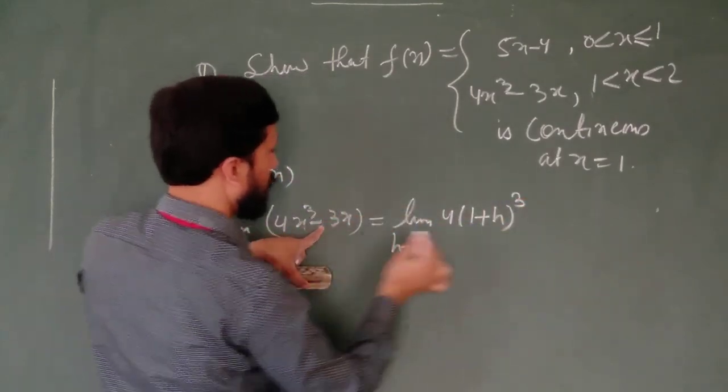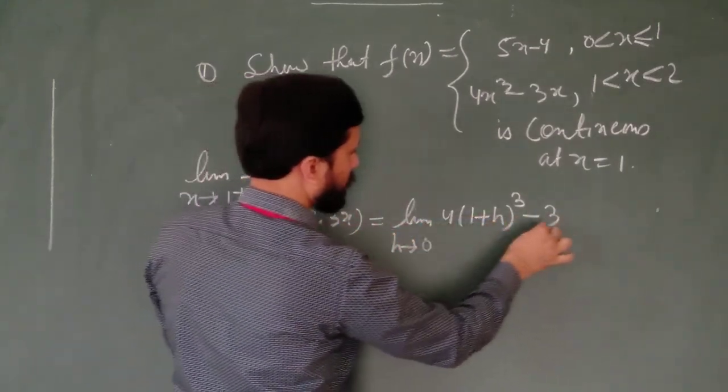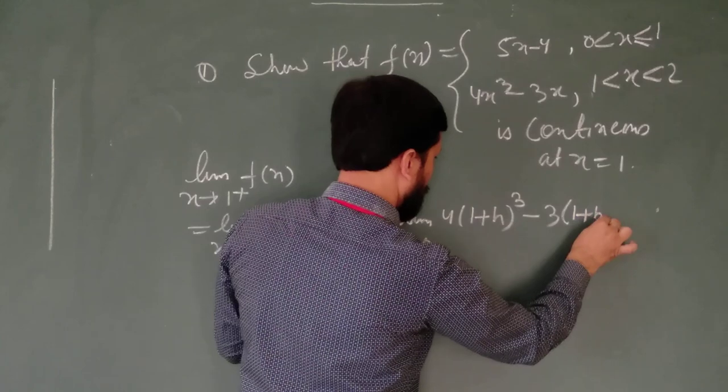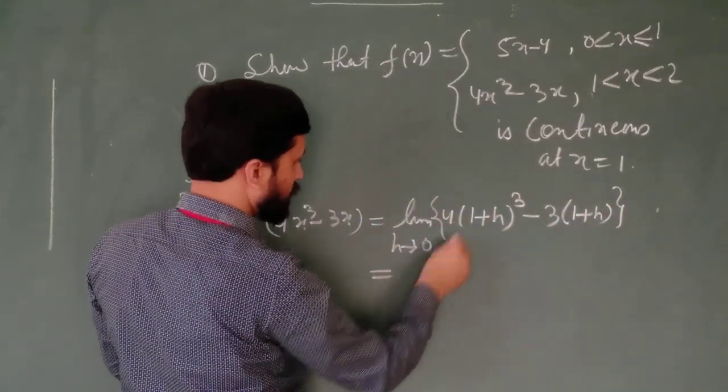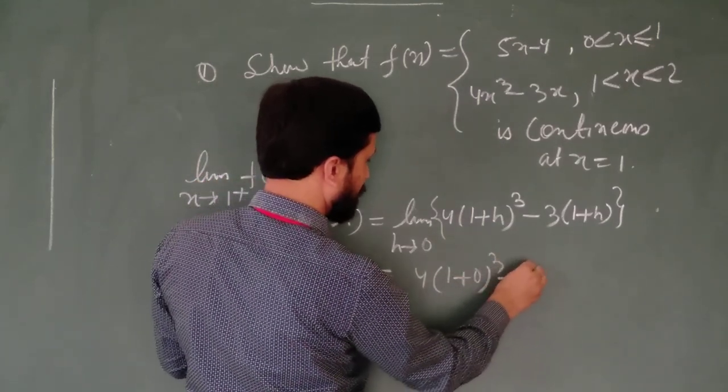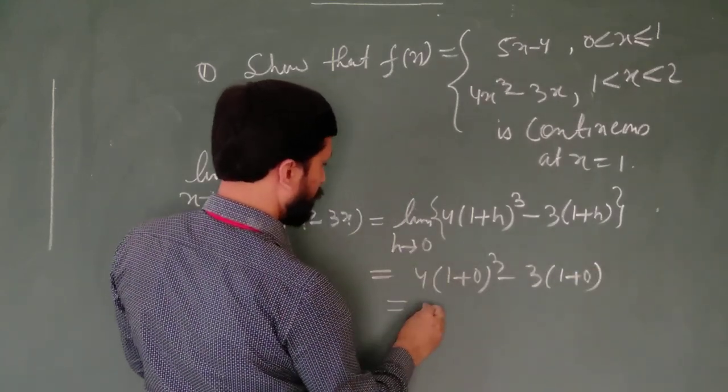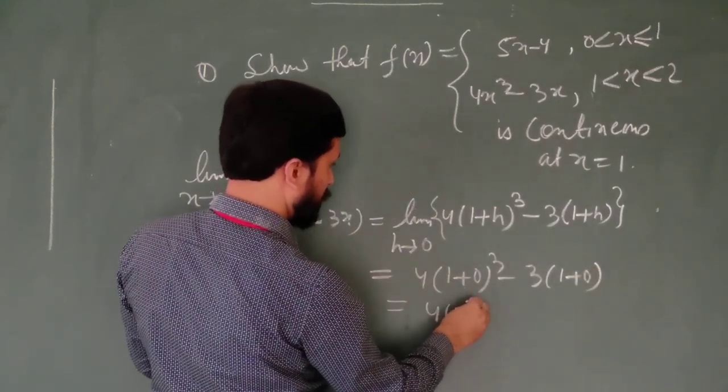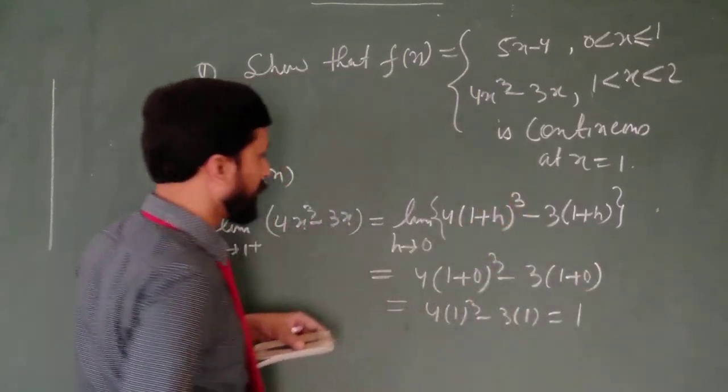1 plus h to the power 3, cube minus. Again, in place of x, we will write 1 plus h. Put this in the bracket. Now put the value of h, 0. 1 plus 0 whole cube minus 3 times 1 plus 0, equal to 4. 1 cube minus 2 into 1. After solving, we are getting 1.